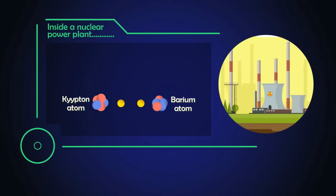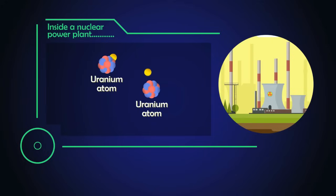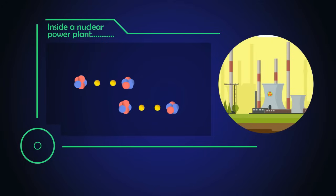And if the right type of uranium is used, the split will produce more neutrons capable of splitting more uranium atoms. This continuous process is called a chain reaction.